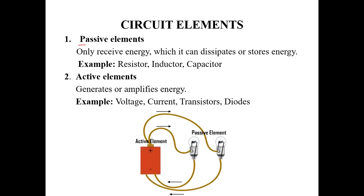Passive elements only receive energy, which they can dissipate or store. Examples of passive elements are resistor, inductor, and capacitor. Active elements can generate or amplify energy. Examples of active elements are voltage, current, transistor, and diodes.